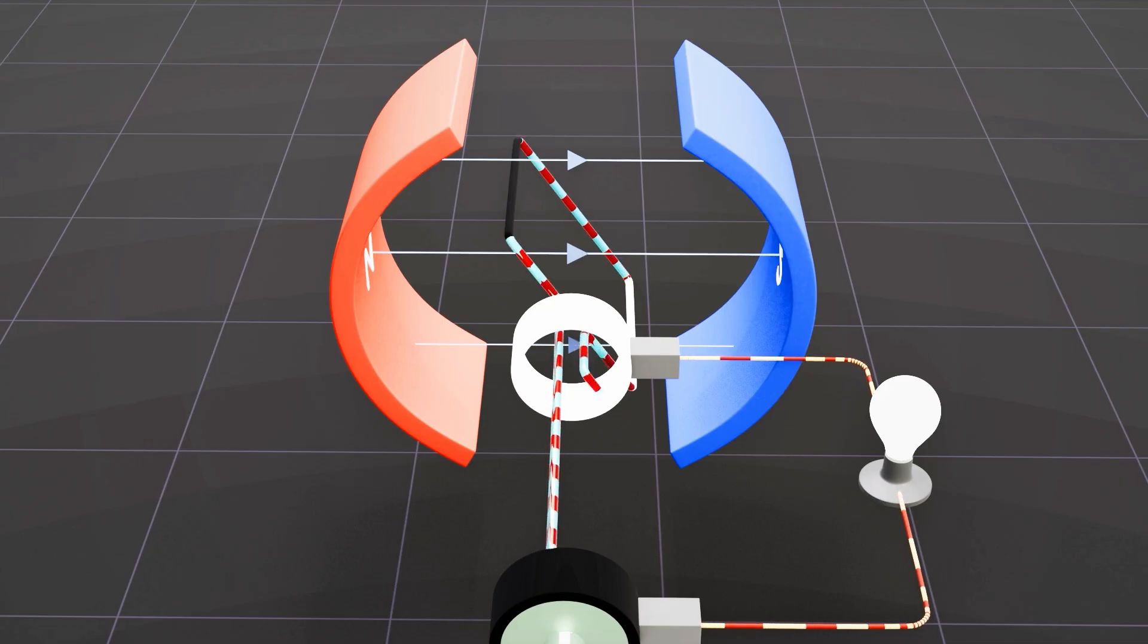During this process, the current flows upward on the black side of the coil and downward on the white side.